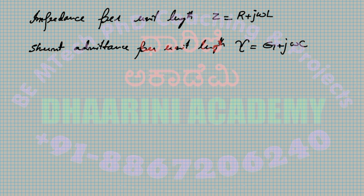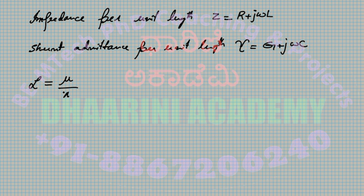In addition to those, we may use other parameters such as flux density. Let us calculate the inductance L. For a two-wire system, L per unit length is given by: L = (μ/π) · ln(2D/d), where D is the separation and d is the conductor diameter. The unit is Henrys per meter.